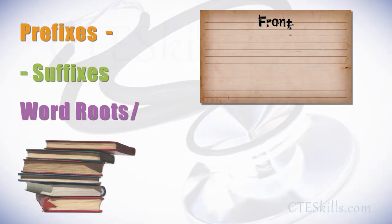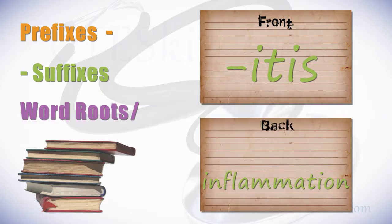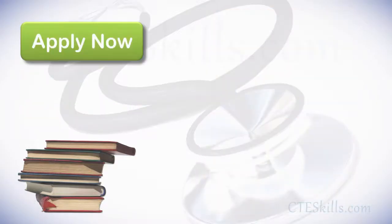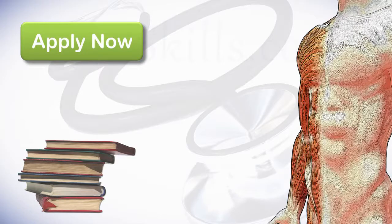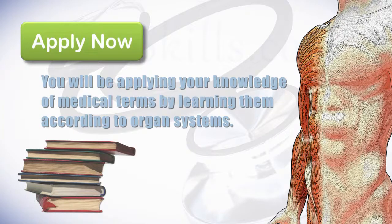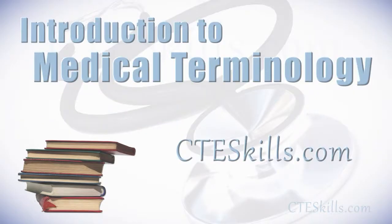Very simple to do — watch. You can place a prefix, suffix, or word root on the front of a card, and the meaning on the back. This easy study method is a great tool in learning medical terminology. But the best way to learn anything is to apply it. Throughout this series of videos, as you learn about the anatomy and physiology of the human body, you will be applying your knowledge of medical terms by learning them according to organ systems. Follow us at cteskills.com for more lessons in medical terminology.